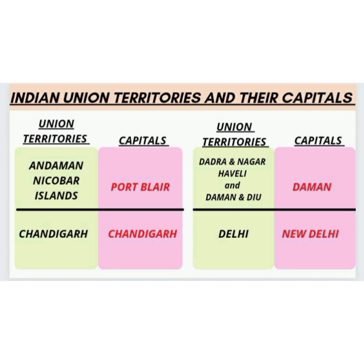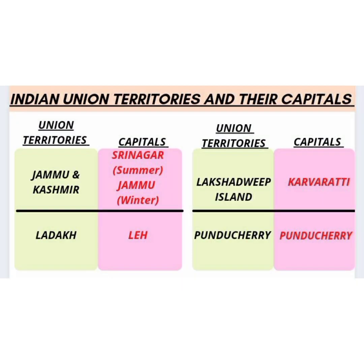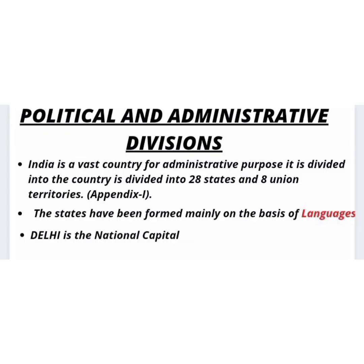The 8 union territories of India with their capitals are: Andaman and Nicobar Islands – Port Blair, Chandigarh – Chandigarh, Dadra and Nagar Haveli and Daman & Diu – Daman, Delhi – New Delhi, Jammu & Kashmir – Srinagar in summer and Jammu in winter, Ladakh – Leh, Lakshadweep – Kavaratti, Puducherry – Puducherry. The states have been formed mainly on the basis of languages.